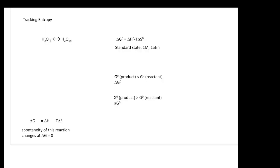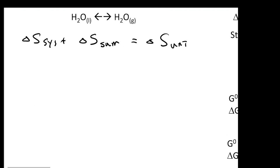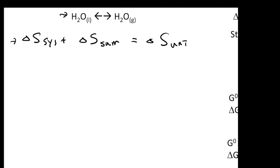We want to actually connect the free energy delta G to your delta S universe. So in the very beginning we say delta S system plus your delta S surroundings give you the delta S of universe. That's actually the definition we got in the very beginning. Let's look at this specific reaction — H2O in the liquid form going into the vapor form — and we can describe these things using this very general definition.